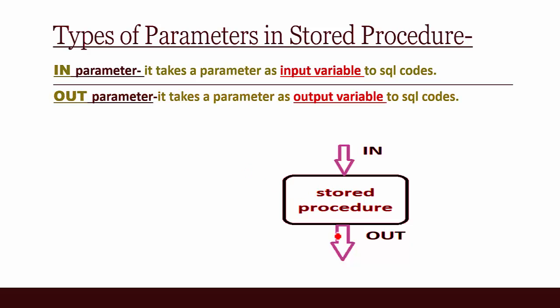The OUT parameter takes a value as an output variable. You don't need to give any value as input. Instead, it will show you the result as an OUT parameter — the final result will be shown as the output.